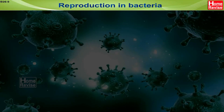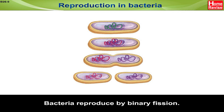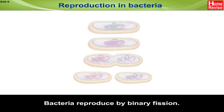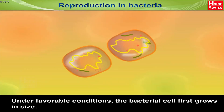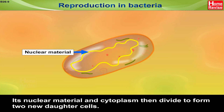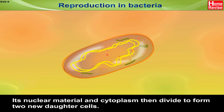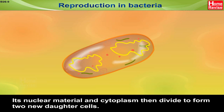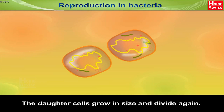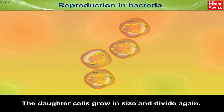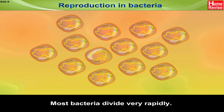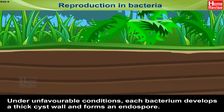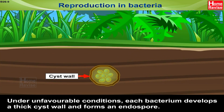Reproduction in Bacteria: Bacteria reproduce by binary fission. Under favourable conditions, the bacterial cell first grows in size, then its nuclear material and cytoplasm divide to form two new daughter cells. The daughter cells grow in size and divide again. Most bacteria divide very rapidly. Under unfavourable conditions, each bacterium develops a thick cyst wall and forms an endospore.